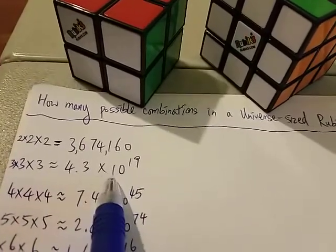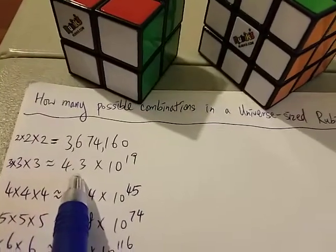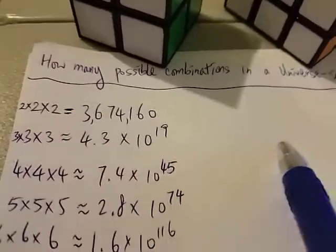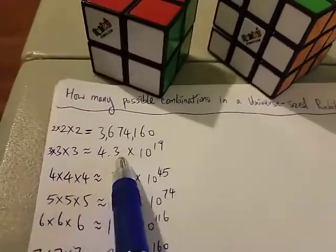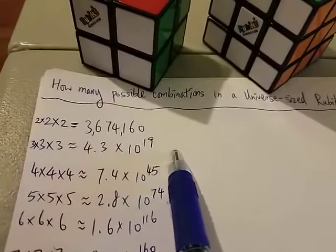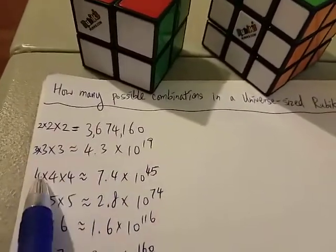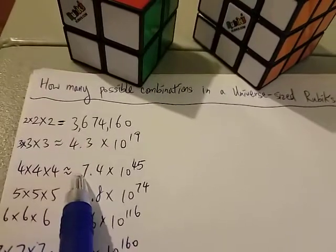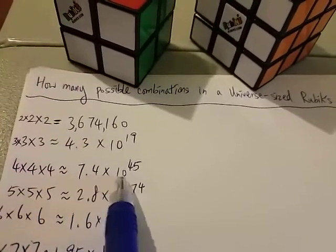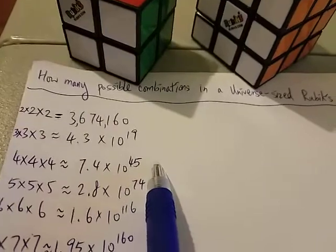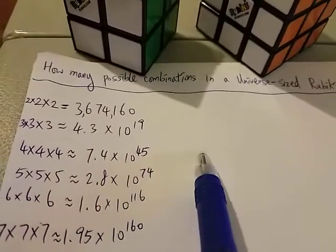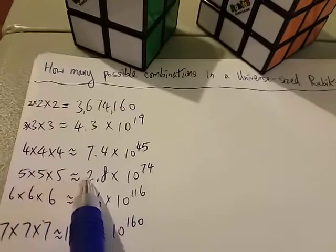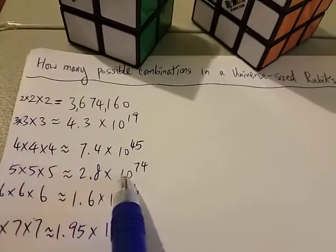This is basically 4 followed by 19 zeros. So this is already an astronomical number. What about 4x4x4? A 4x4x4 has around 7.4 times 10 to the 45 ways. And for a 5x5x5, there are around 2.8 times 10 to the 74.